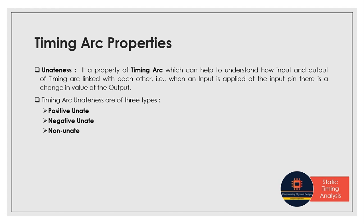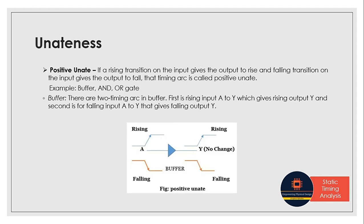Timing arcs are of three types: positive unateness, negative unateness, and non-unateness. In positive unateness, if we give a rising transition on the input we get a rising output, and if we give a falling transition on the input we get a falling output. There is no change in transition direction between input and output — whatever transition we give on the input, we get the exact same transition on the output.